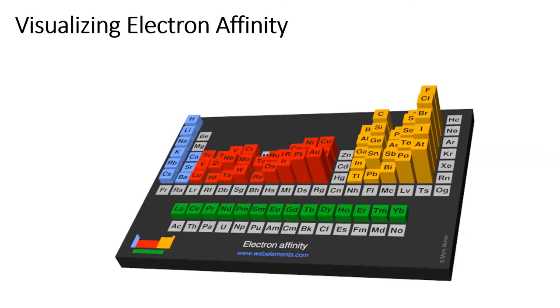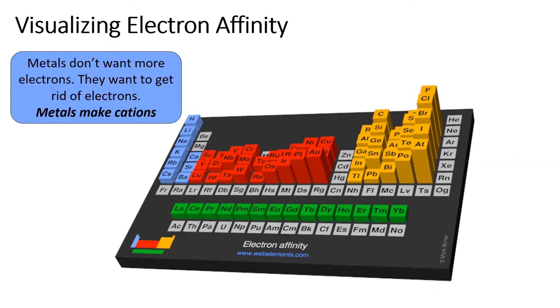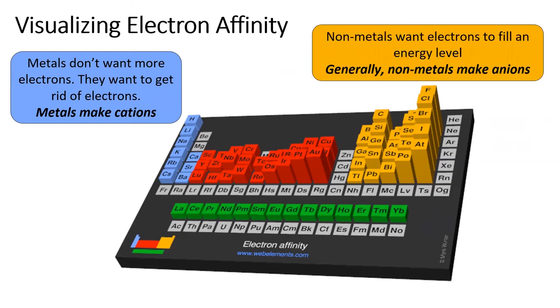This visualization of electron affinity shows that the general trend has many exceptions. However, it does a good job showing the difference between metals and nonmetals. Metals have low electron affinities and would much rather get rid of their electrons to form cations. Nonmetals have higher electron affinities and like to gain electrons to form anions.